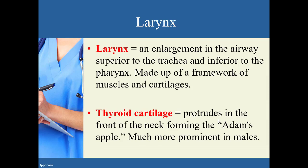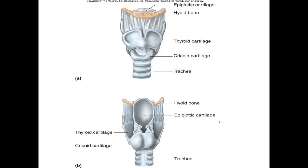The first cartilage is the thyroid cartilage, which forms the Adam's apple — it's much more prominent in males and protrudes out of the front of the throat. In this image we have both the anterior and posterior views. The cursor shows the part that would stick out, which you can feel very easily and see noticeably on a male.